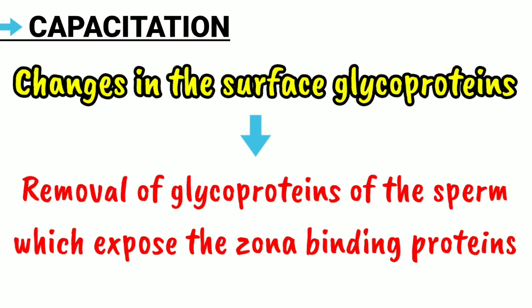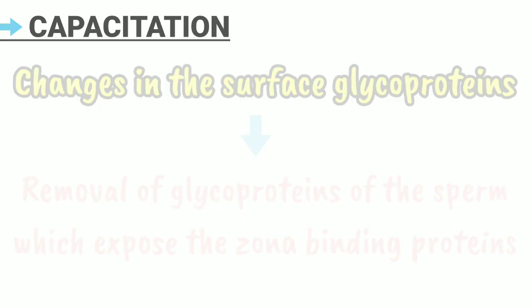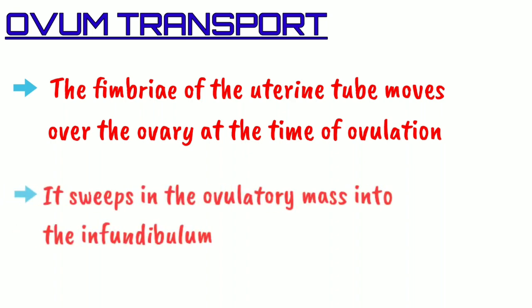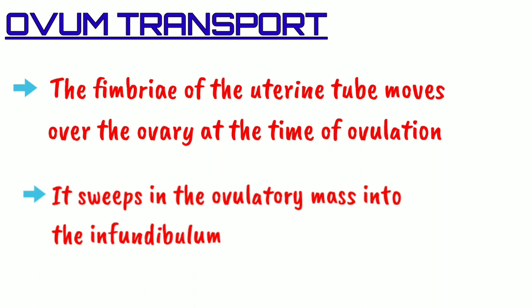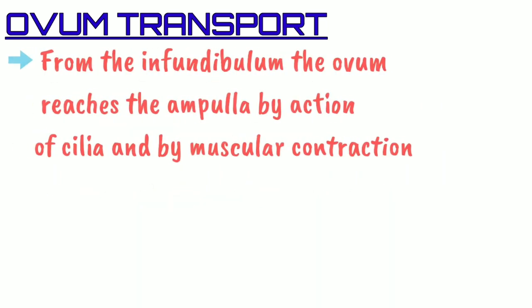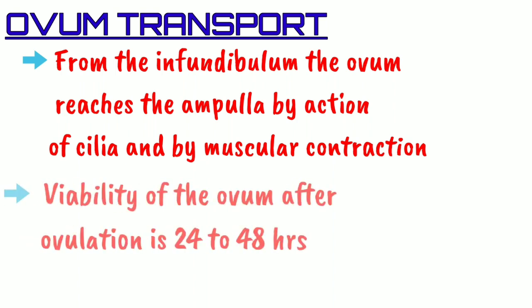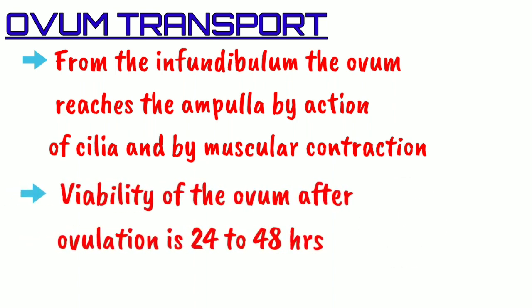For ovum transport, the fimbria of the uterine tube moves over the ovary at the time of ovulation and sweeps the ovulatory mass into the infundibulum. From the infundibulum, the ovum reaches the ampulla by the action of the cilia and by muscular contractions. The viability of the ovum after ovulation is 24 to 48 hours.